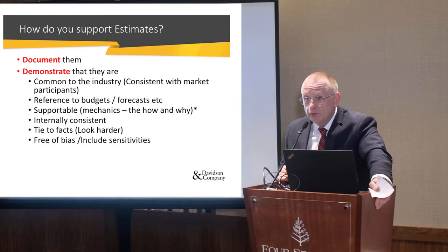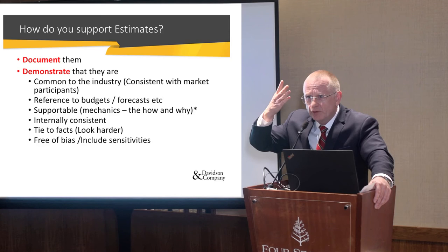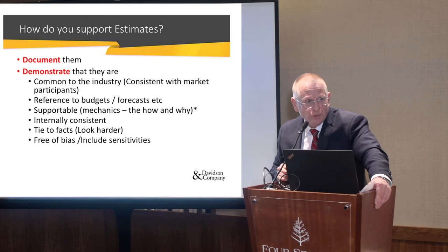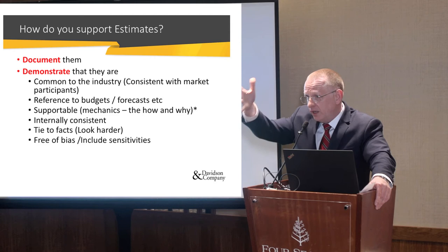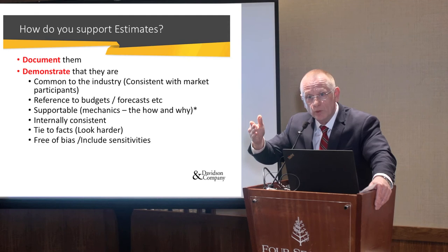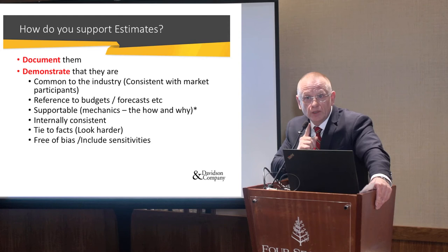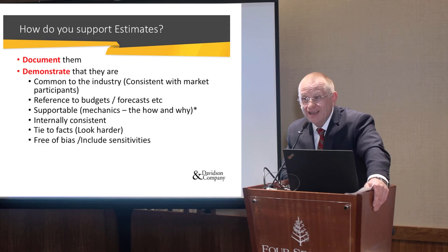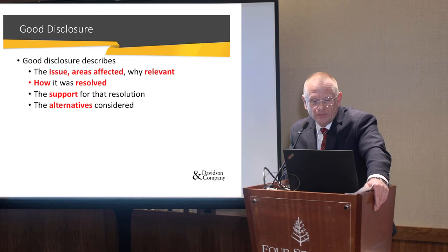To remain free of bias, at least present the whole range of alternatives. For example, if you need a gross margin reflective of market participants, just Google six large competitors, see what their MD&As disclose with respect to gross margins - those competitors are the market participants. Put a memo together with their margins. That gives you facts to tie into. Identify bias. Be internally consistent. Tie back to the facts and consider sensitivities. Good disclosure describes the issue, the areas affected, why it's relevant, how it was resolved, the support, and the alternatives considered.